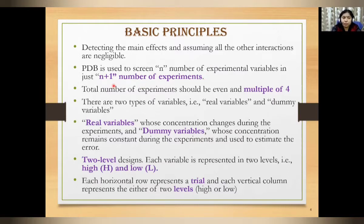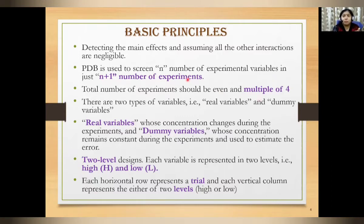Ab yahan par jo N plus 1 hai, iske saath inhone kuch conditions lagayi. Pehli cheez — yeh aapke even number hone chahiye. Second, even hone ke saath saath multiple of four hone chahiye. Jaise six or ten even toh hain, lekin yahan apply nahi honge kyunki wo multiple of four nahi hain. Next, inhone kaha ki jitne bhi aapke variables hain kisi bhi media mein, unko unhone do parts mein categorize kar diya.